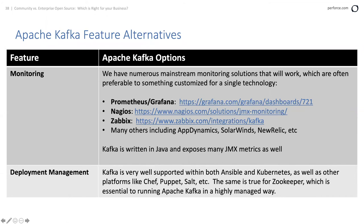Kafka integrates with raw TCP packets using Netty if needed. It's built with performance in mind and written in Java, so all the standard tooling applies. Prometheus and Grafana are becoming ubiquitous with Kafka — it makes sense because it's easy to expose JMX metrics out of Kafka using the Prometheus JMX exporter. Kafka is well supported with Ansible, Kubernetes, Chef, Puppet, and Salt — and it actually works very well inside Kubernetes versus other messaging platforms.